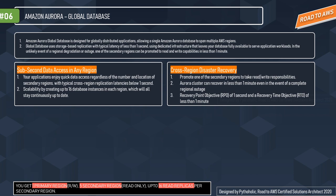The second feature is cross-region disaster recovery. If your primary region suffers a performance degradation or outage, you can promote one of the secondary regions to take read and write responsibilities. An Aurora cluster can recover in less than one minute even in the event of a complete regional outage. For the business, this provides an effective recovery point objective (RPO) of one second and a recovery time objective (RTO) of less than one minute.